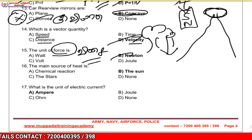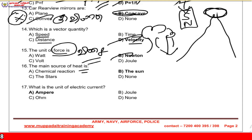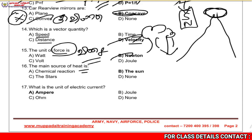Question 16: The main source of heat and light is the Sun. The answer is the Sun.